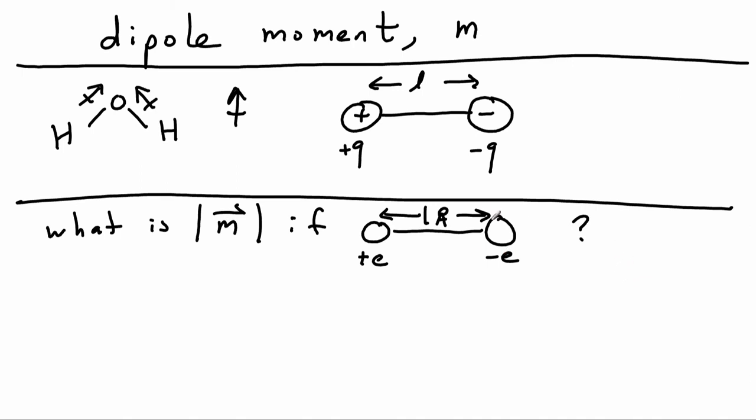So this would be a really huge dipole moment because we have fully developed charges on both ends of the dipole moment. So the way a dipole moment is defined is that the magnitude of the dipole moment vector is just the charge times the length.